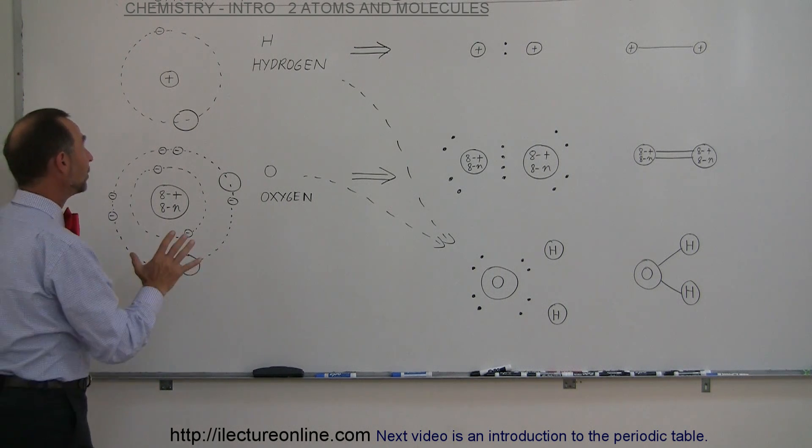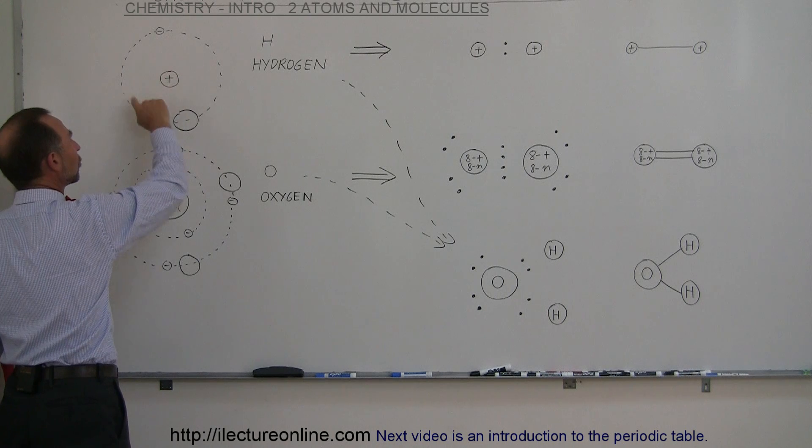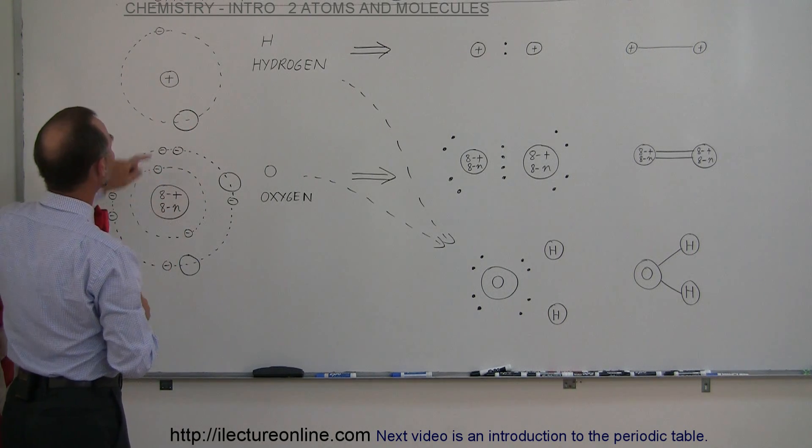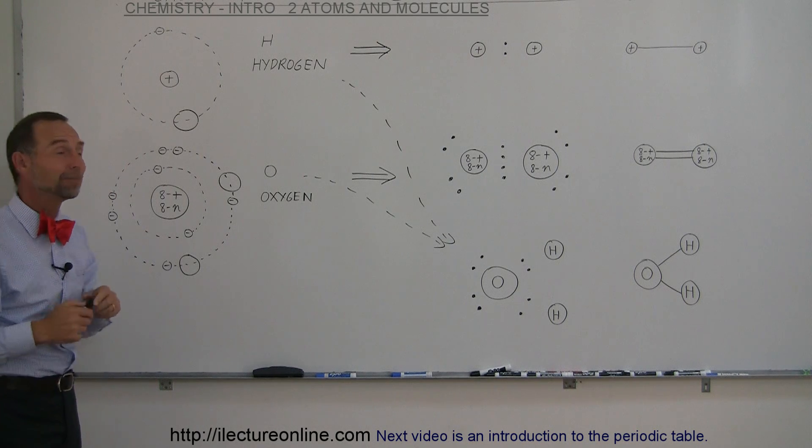Again, an atom is something that has a nucleus with protons and neutrons. It turns out hydrogen is the only atom in the universe that does not have a neutron in its nucleus.